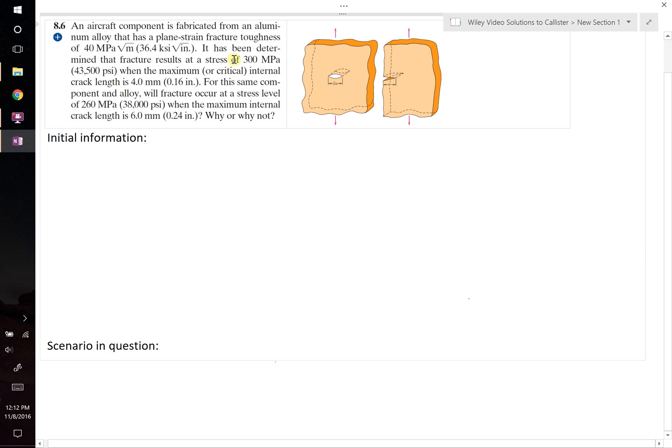We're told that an aircraft component is made of aluminum, and we're given the plane strain fracture toughness value. So K1c equals 40 MPa root meters.